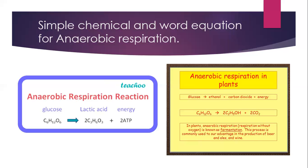Our muscles use lactic acid fermentation when there is not enough oxygen to do aerobic respiration. Your muscles will feel cramped and painful, but the pain will go away as soon as you get enough energy flowing back to those muscles. Other organisms use a different pathway, creating alcohol and carbon dioxide instead of lactic acid from pyruvic acid. They still make NAD+ for glycolysis to use, but the pathway is a little different.